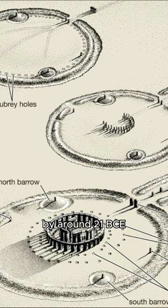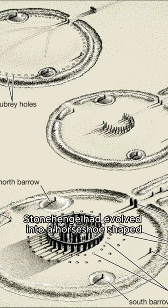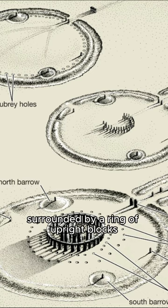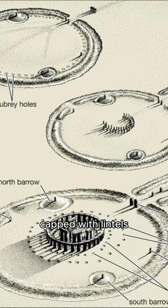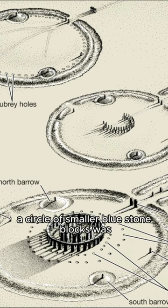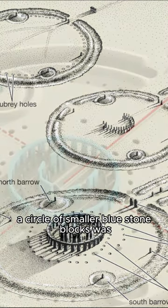By around 2100 BCE, Stonehenge had evolved into a horseshoe-shaped arrangement of five sarsen triliths surrounded by a ring of upright blocks capped with lintels. Inside the circle, a circle of smaller bluestone blocks was erected.